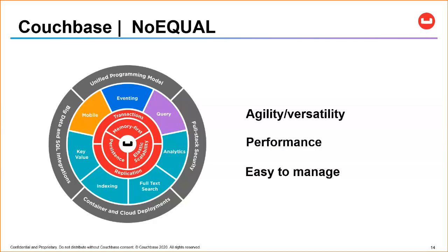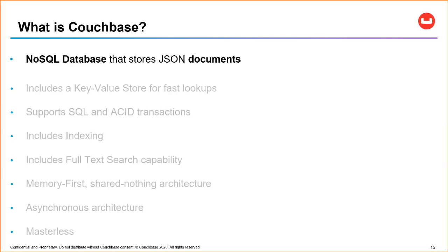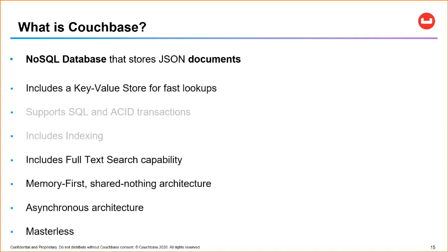We've also added SQL — been there for a while — and we've recently added ACID transactions, plus indexing to support performant SQL queries. These are the best things from the relational world. I mentioned it's deployment agnostic, also called cloud native: you can deploy Couchbase anywhere — your own private cloud, data center, bare metal, VMs, Kubernetes, or in a public cloud. We've also introduced a fully managed DBaaS called Couchbase Cloud, currently available on AWS and Azure.